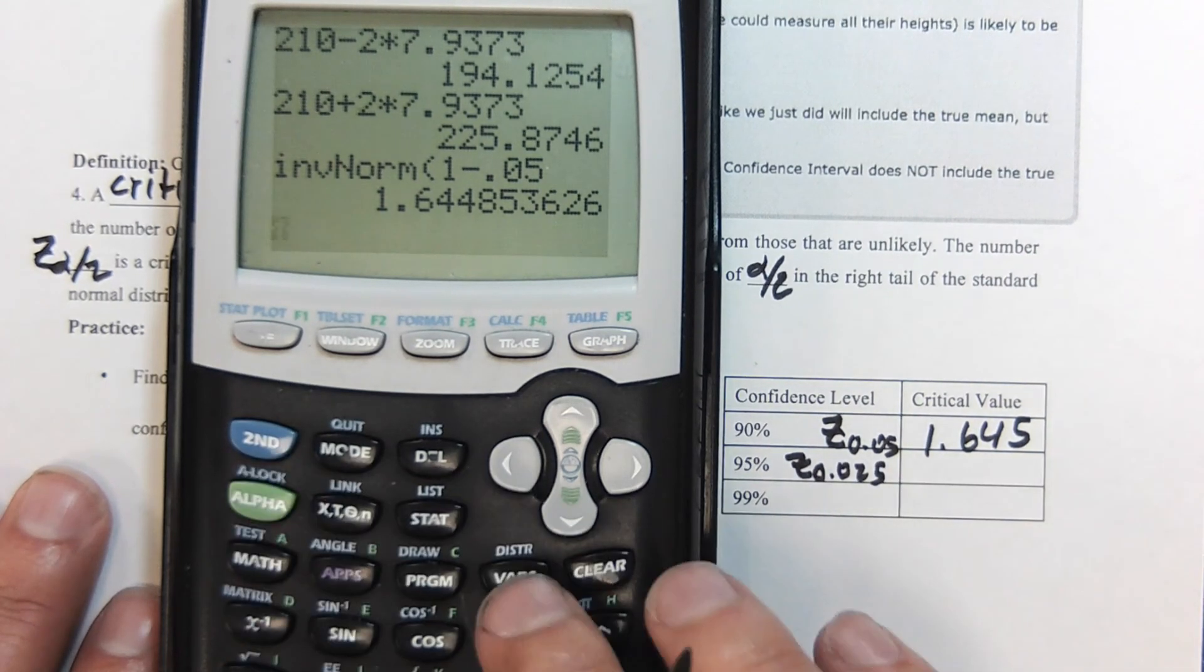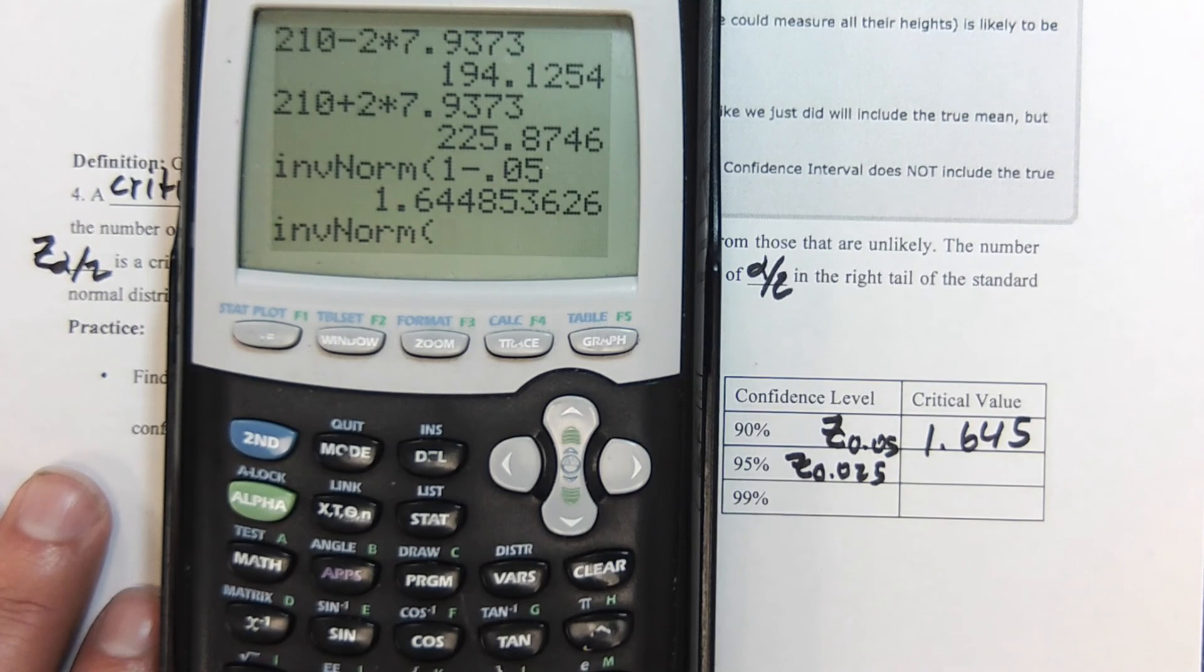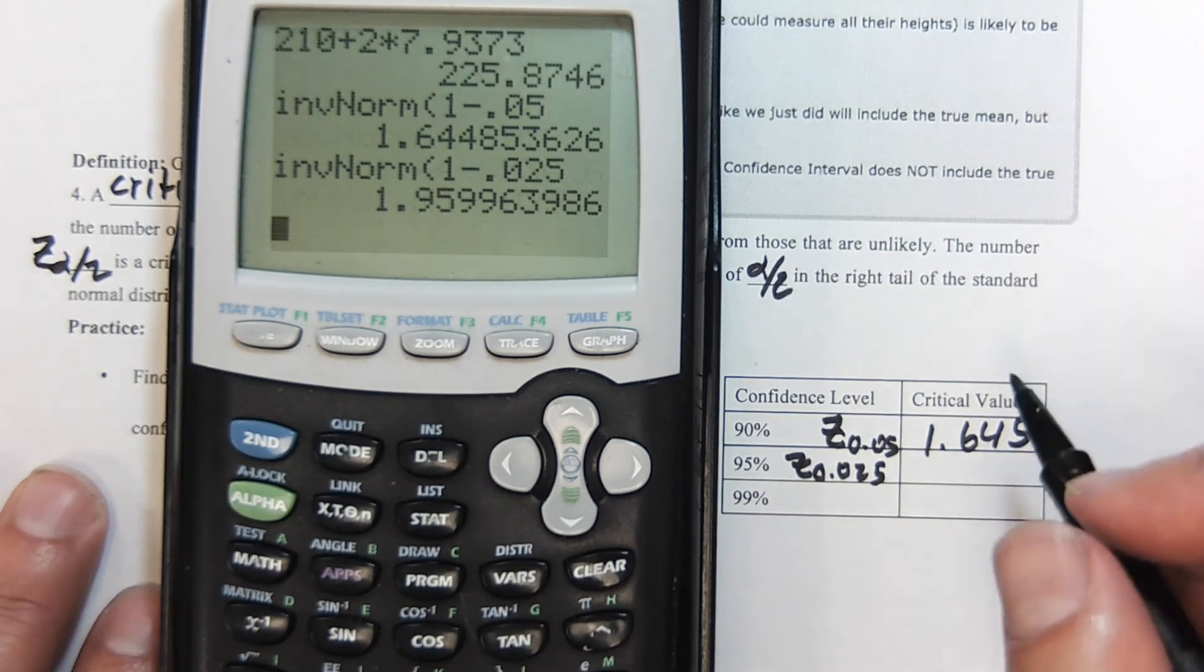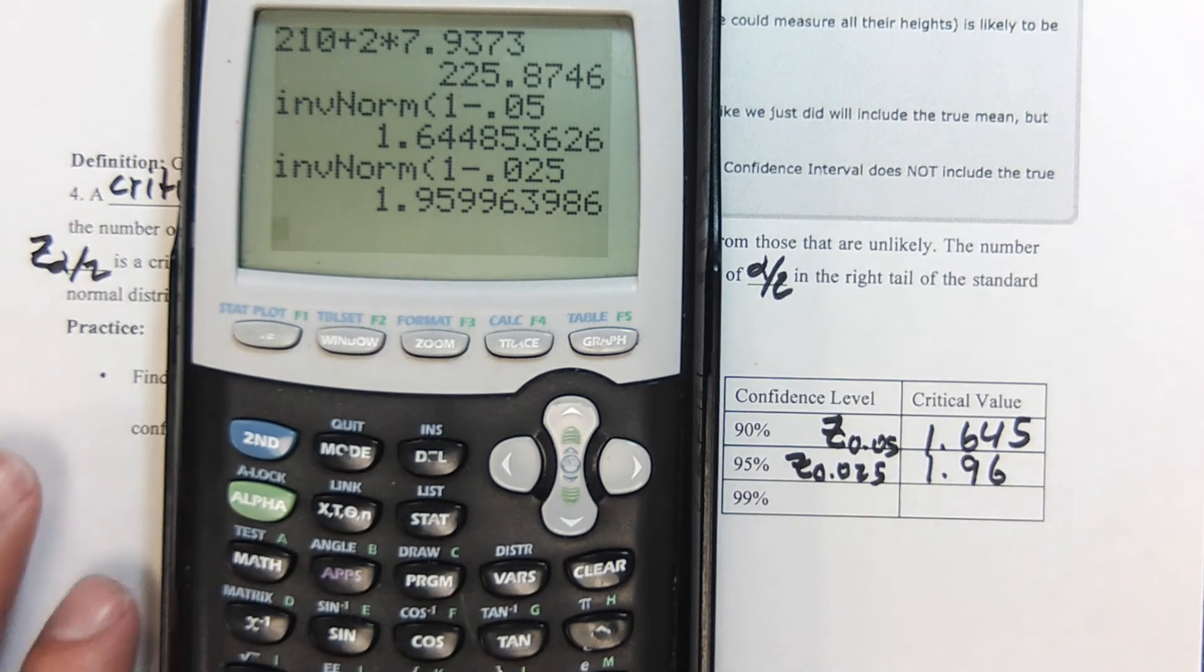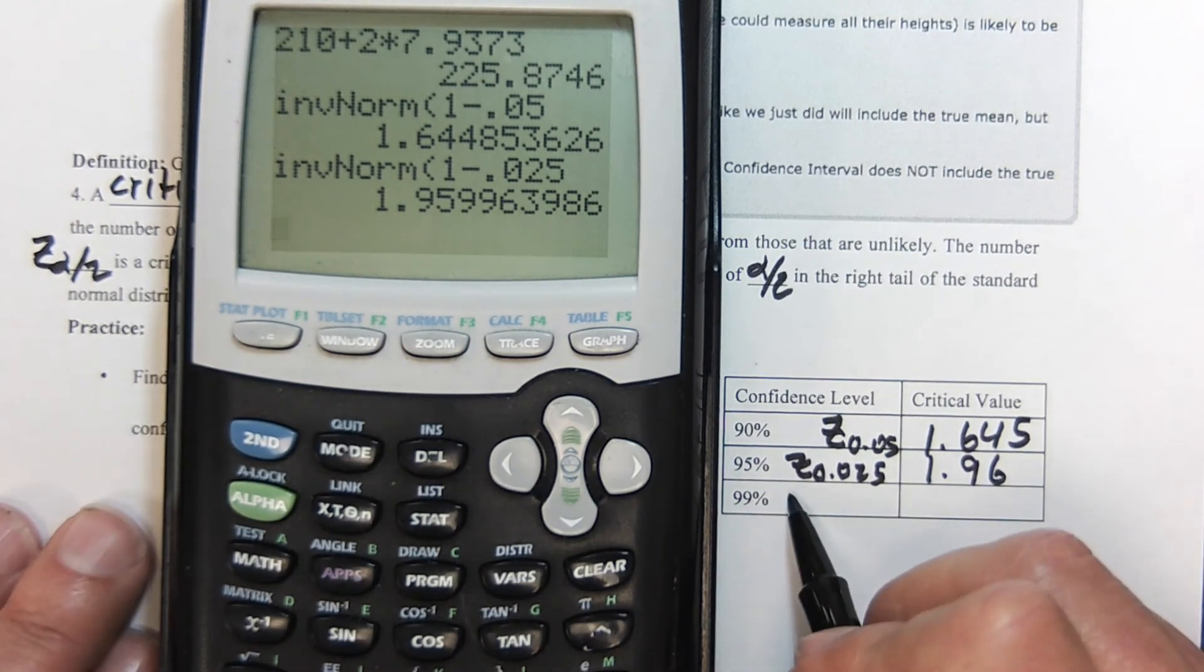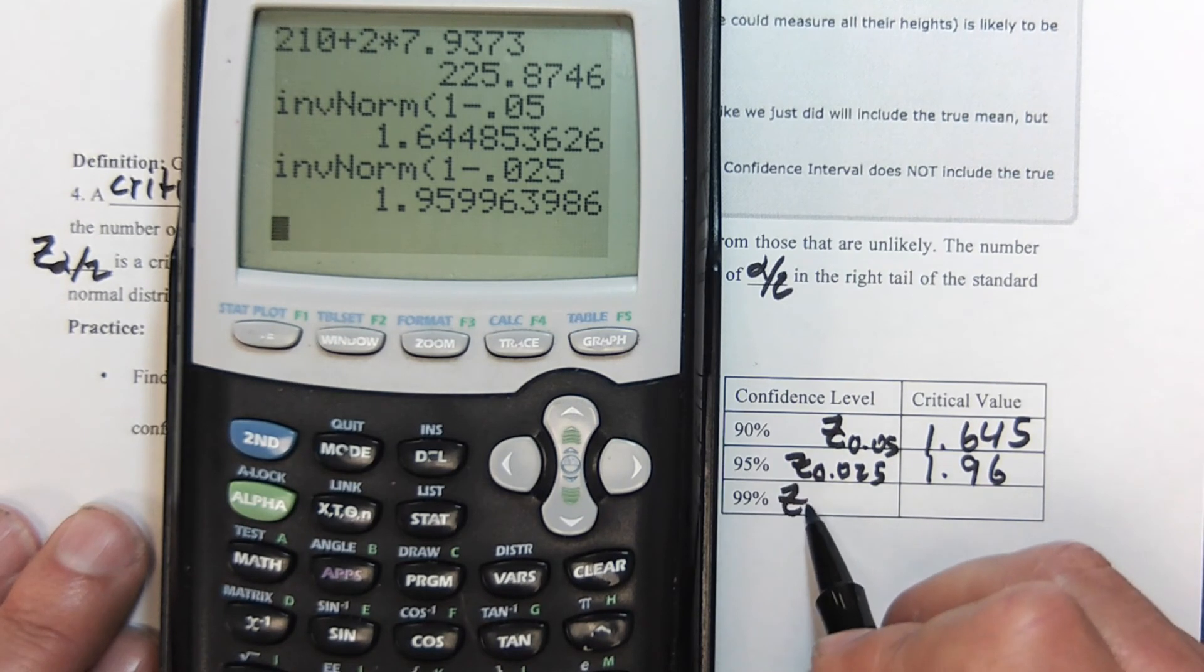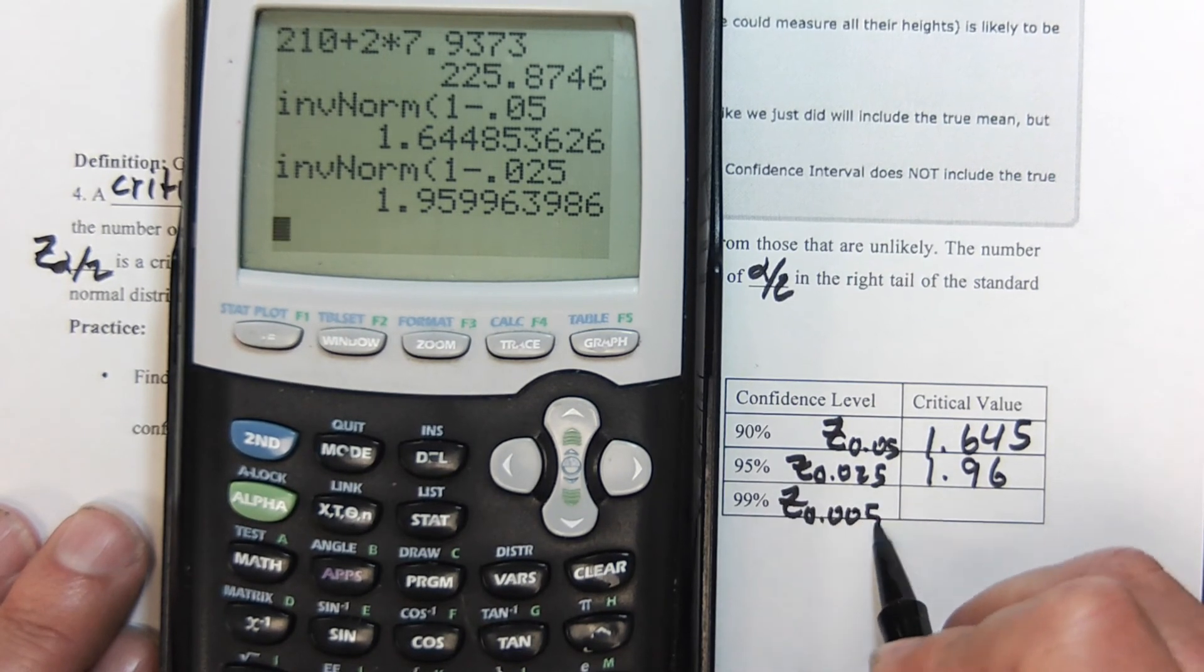So I'm going to do inverse norm of 1 minus 0.025, which gives us 1.96. And here alpha is 0.01, half of that alpha is going to be 0.005.